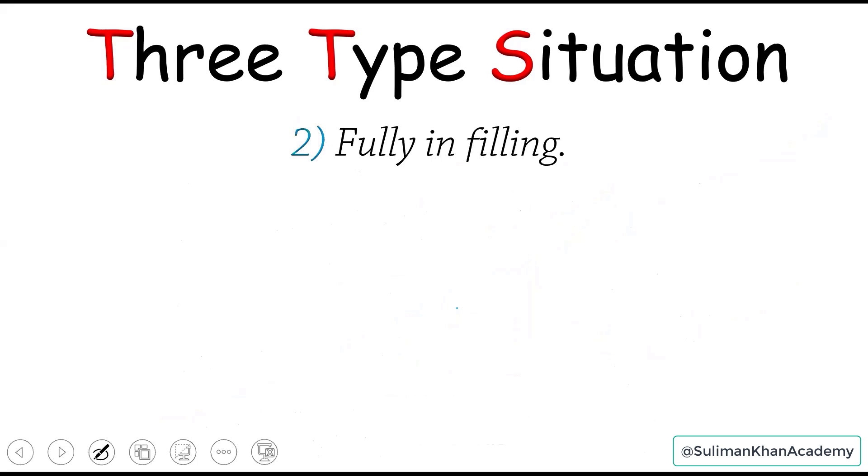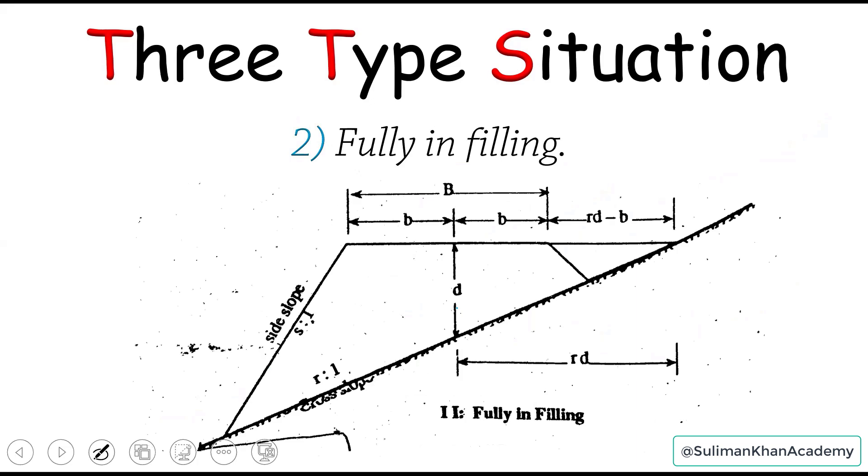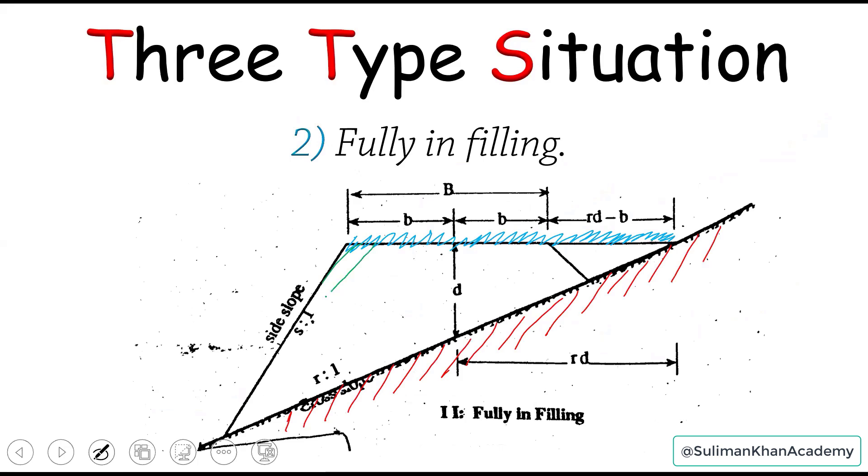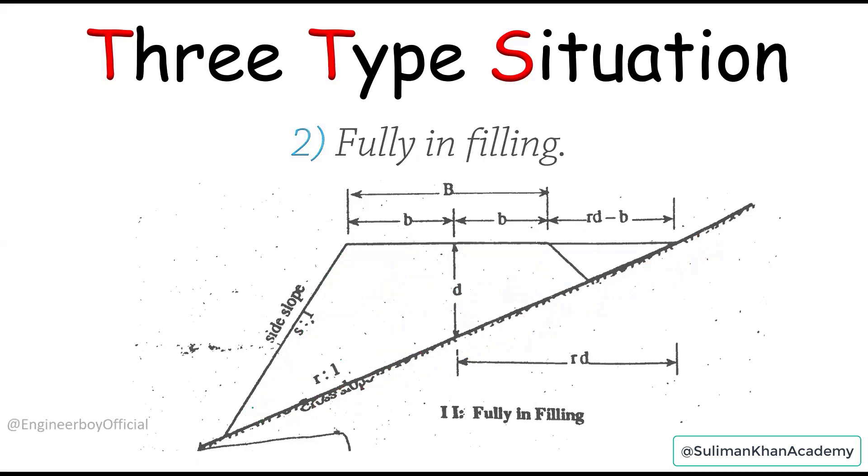Moving ahead, fully in filling - there can be filling as well because as you can see the formation level this time, this is just the formation level that I'm highlighting with blue marker. So this is the formation level. And as you can see, this is above the natural surface level or above the cross slope, or the slope of the mountain. So that means we have some filling over here. This is the filling as I'm shading. And this filling, the formula is going to be the same formula.